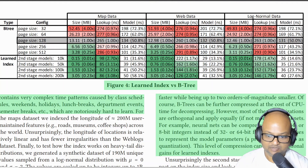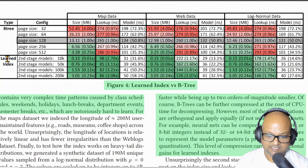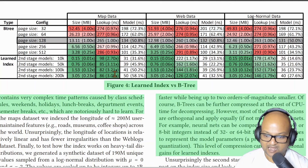This table summarizes the results and the authors have used a read optimized B tree as the baseline for comparing all the others. These learned indexes are actually performing quite well — they are between one and a half to three times faster at lookups, but almost two orders of magnitude smaller in size than B trees.